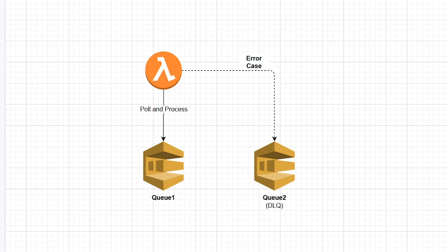Unfortunately there's no easy way to do this in the AWS console. There's no button that says click this and transfer messages between this queue to this queue.